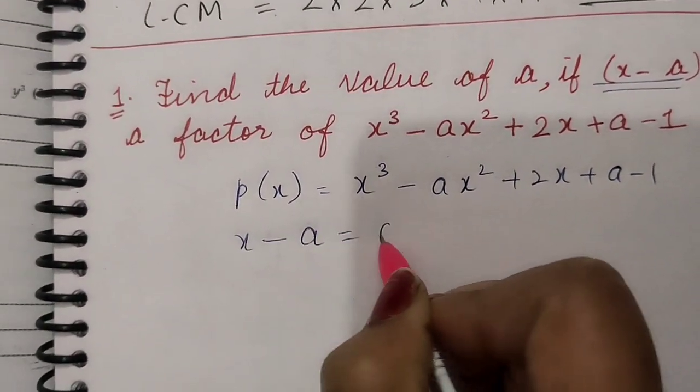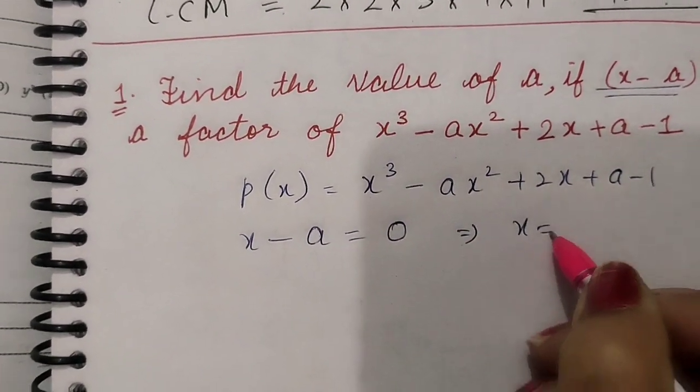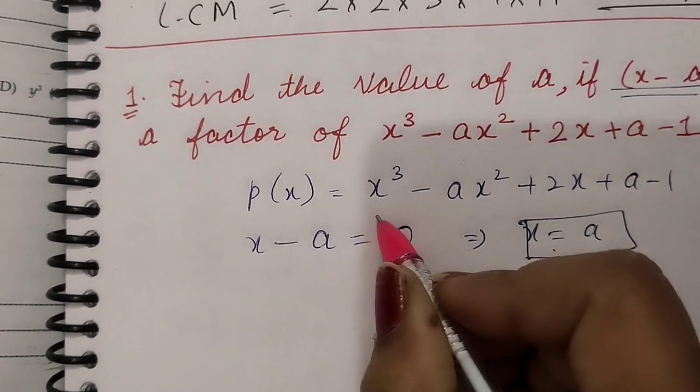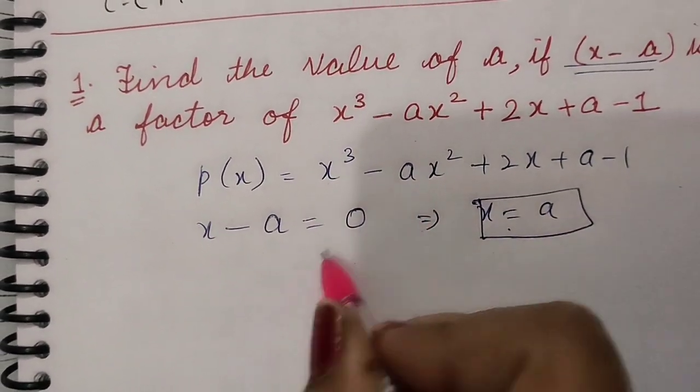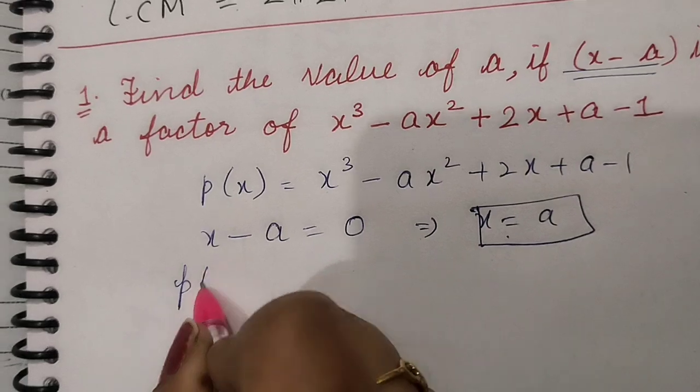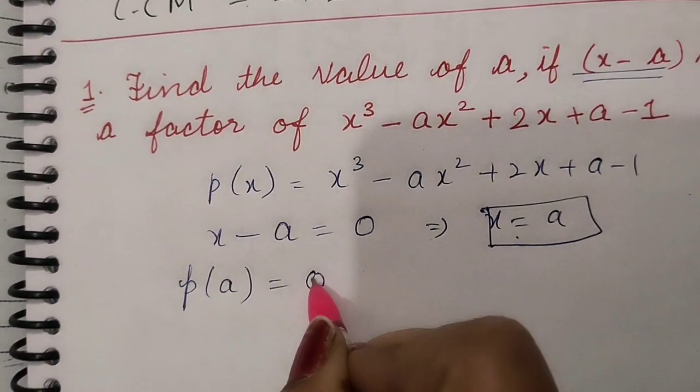If you equate (x - a) to 0, you are able to say that x is equal to a. This is a zero of the given polynomial. And what do you mean by zero? That simply means that p(a) is equal to 0.